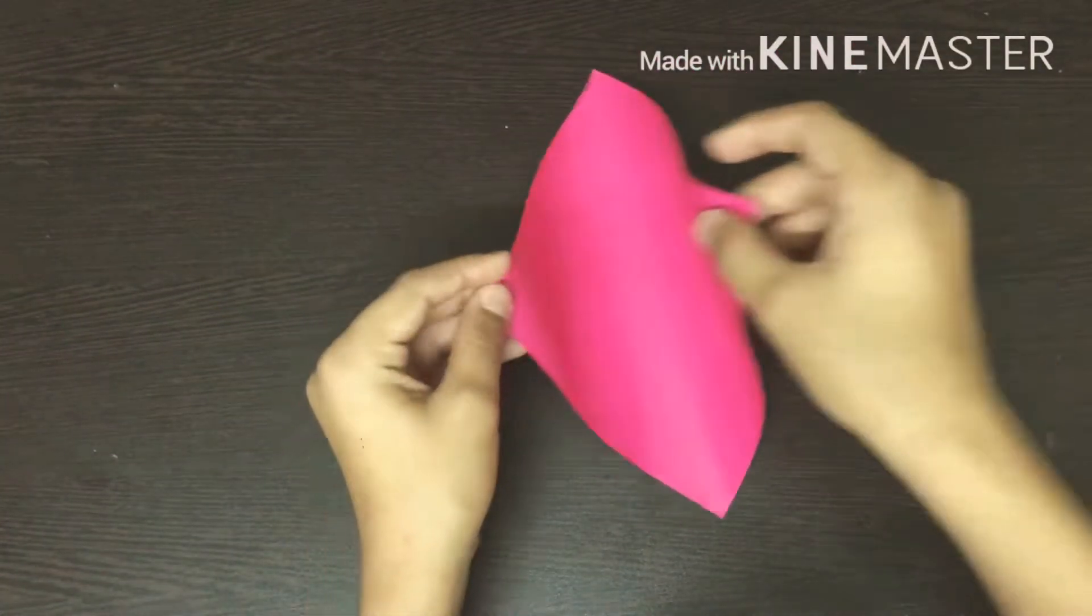To make it, you need an origami colorful sheet. Fold this side to this corner.